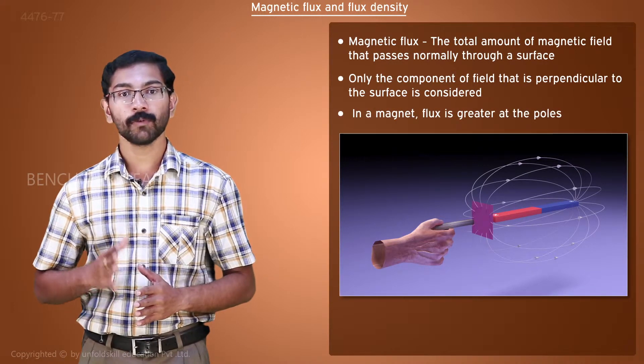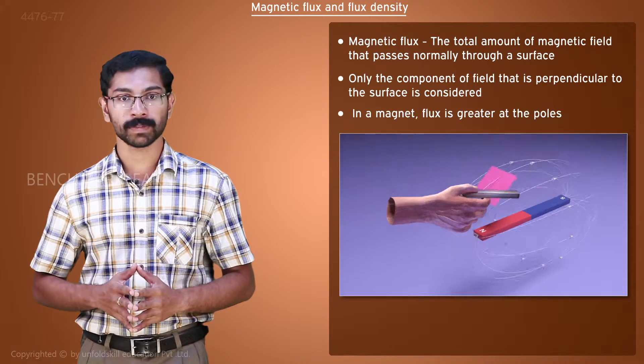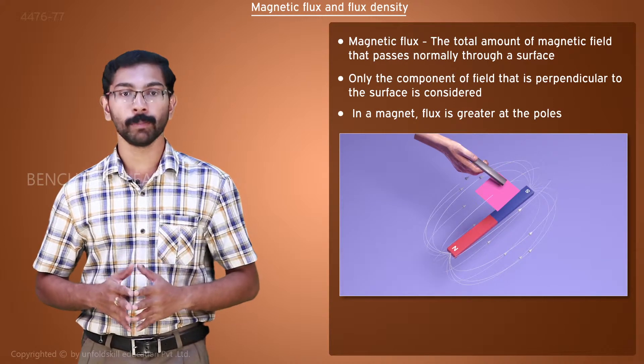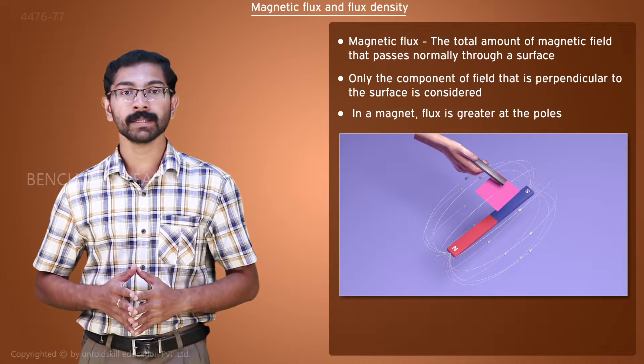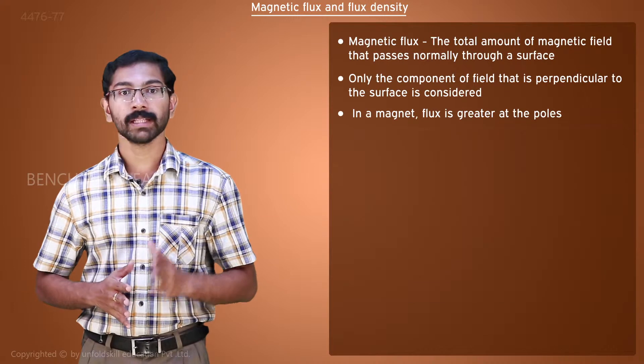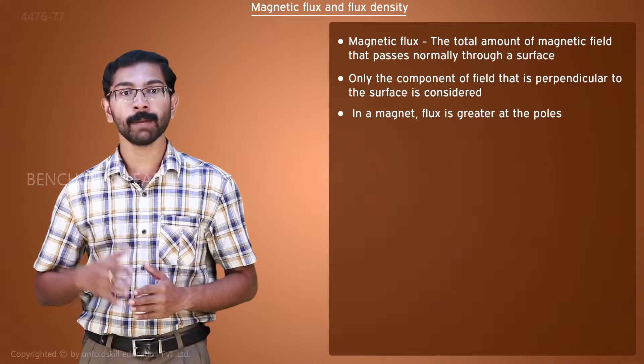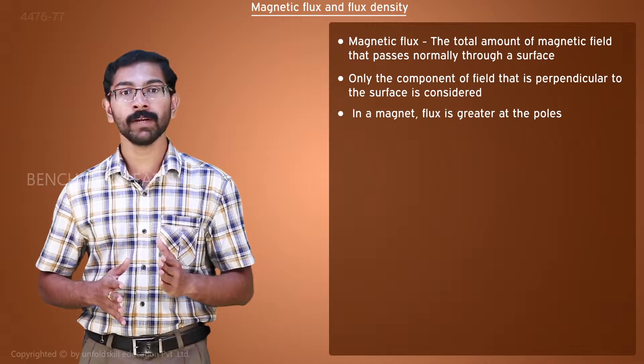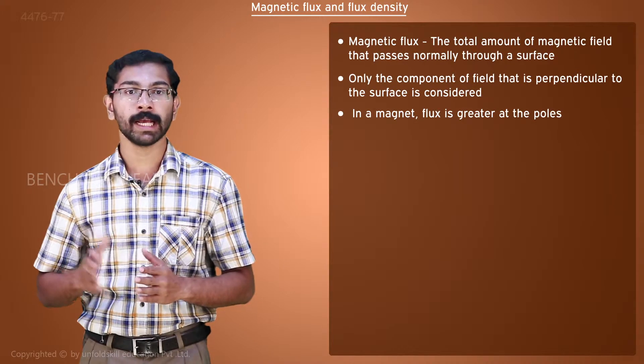In a magnet, flux is greater at the poles compared to midway between the poles. Sometimes, magnetic field lines are also called magnetic flux lines. The idea of magnetic field and magnetic flux are valid for both permanent magnets and electromagnets.